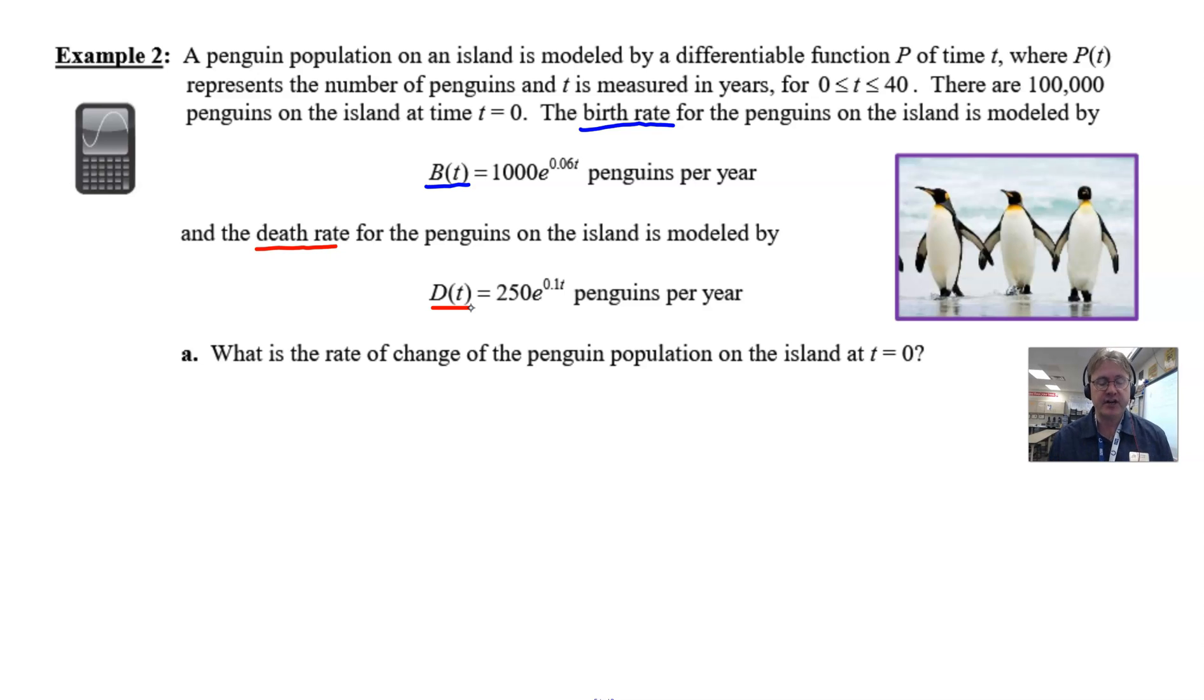So if we're looking for the rate of change of the total number of penguins, well we understand that that's a difference between the two, right? We have our rate at which penguins are being born on this island, and then we have this rate at which they're being taken away because of death. So we just simply have to subtract those two values, and we're going to do so at a very specific moment in time, which is at this time zero. So your setup is nothing other than taking B(0) minus D(0), and that will be our answer.